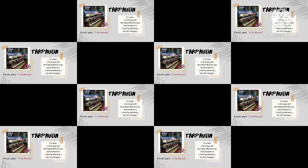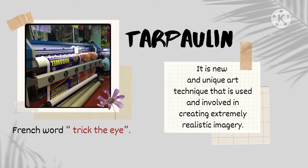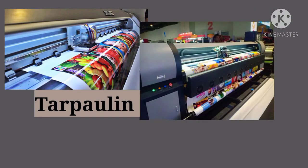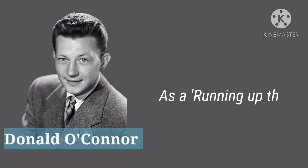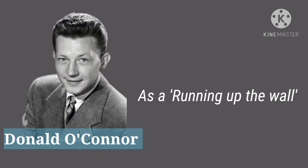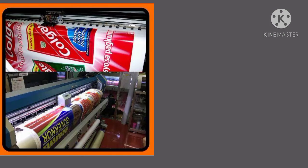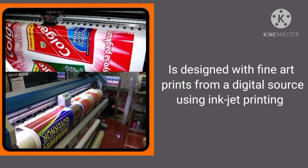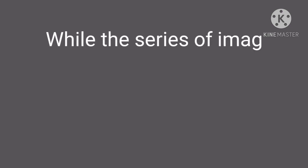Trompe l'oeil, also associated with tarpaulin printing, is a French term meaning 'trick the eye.' It is a unique art technique used to create incredibly realistic imagery and optical illusions that depict three-dimensional objects on a two-dimensional surface. It was famously employed by Donald O'Connor in his running-up-the-wall scene in the film 'Singin' in the Rain.' Tarpaulin is also used in theater as a backdrop, and some are designed with fine art prints from a digital source using inkjet printing. A series of images representing a continuous scene is called a cyclorama.